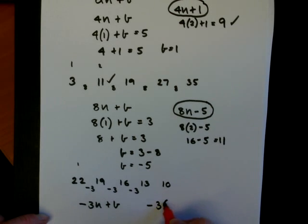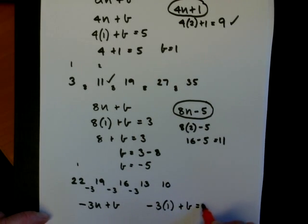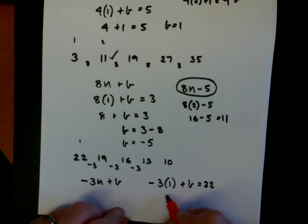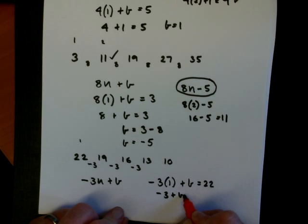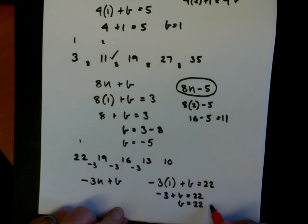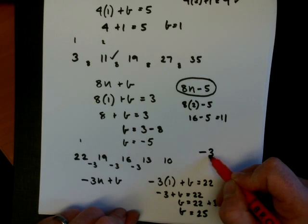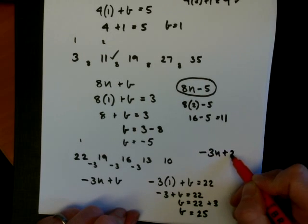So minus 3 plus b equals 22. So b equals 22 plus 3. So b equals 25. So the nth term here then is minus 3n plus 25.